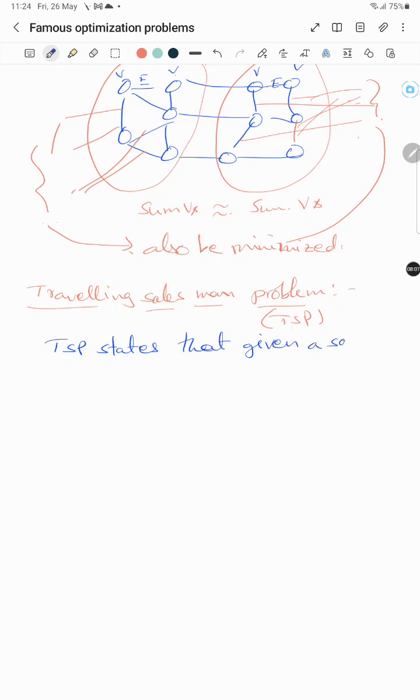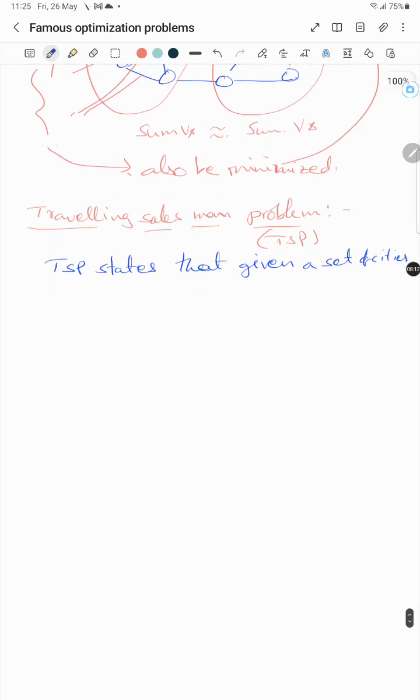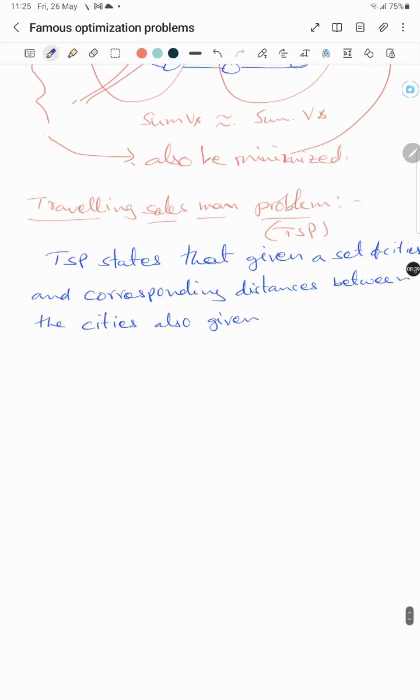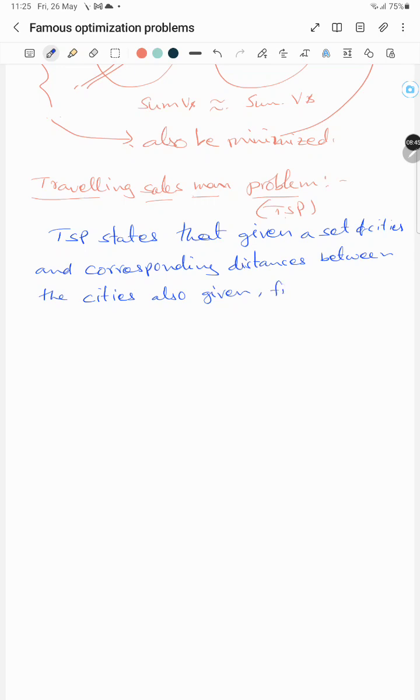So this traveling salesman travels several cities. Cities and corresponding distances between the cities are also given.